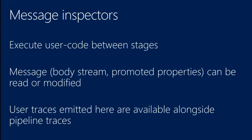One feature we enable for BizTalk Services 1.0 is that if you emit custom traces from within your message inspector code, we will collect those traces and show them in context with the other traces — for example, validate, enrich, transform stages. The traces will show executing validate, executing transform, executing enrich, and then in between you will see your own trace statements. This makes it much easier to figure out what steps happened for a specific message. The request ID, which is unique per execution, is what you use to correlate your traces with our traces.